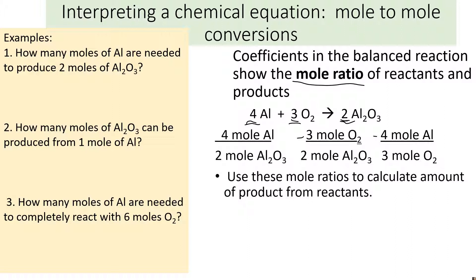Let's look at some example problems and see how we'll use a mole ratio to solve these. The first one says: how many moles of aluminum are needed to produce two moles of aluminum oxide? To get two moles of aluminum oxide, you can see it takes four moles of aluminum. You could solve it just by looking at it, but let me show you how the math works, because sometimes the numbers aren't as simple. Our given in this case is two moles of Al₂O₃, so that's what we start with.